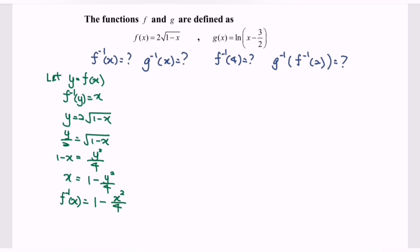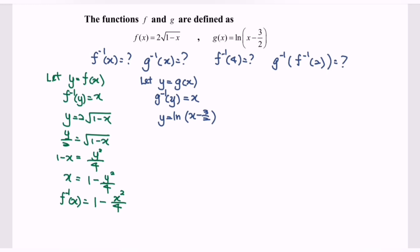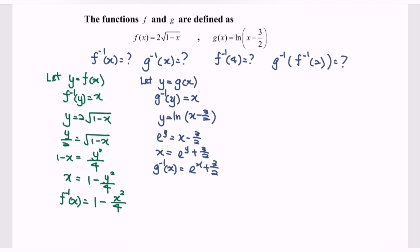Next, find g inverse. Let y equal g(x), so g inverse of y equals x. We have y equals ln of bracket x minus 3 over 2. Express x in terms of y: e to the power y equals x minus 3 over 2. Rearranging: x equals e to the power y plus 3 over 2. Therefore, g inverse of x equals e to the power x plus 3 over 2.